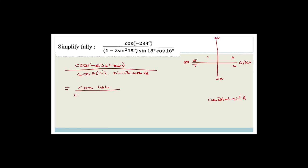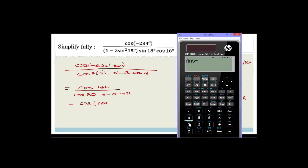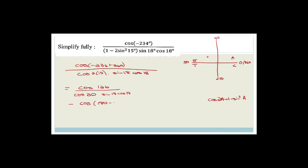Cos 126 equals negative cos 54, using the 180 minus rule. Now cos 30 from the special triangle — a 30-60-90 triangle with sides 1, root 3, 2 — gives cos 30 equals root 3 over 2. So we have negative cos 54 all over root 3 over 2, multiplied by sine 18 times cos 18.